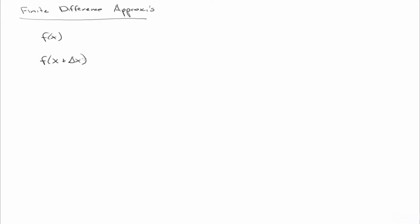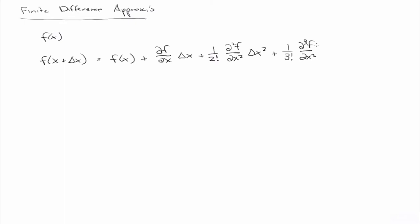Remember, if we have a continuous function f of x, then its Taylor series expansion about a point x plus delta x includes terms with 2 factorial, 3 factorial, and so on — it's an infinite expansion.